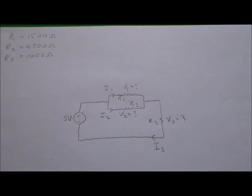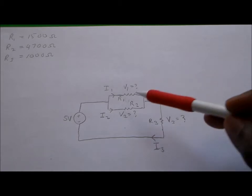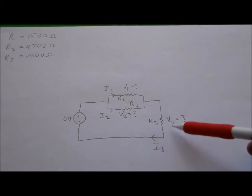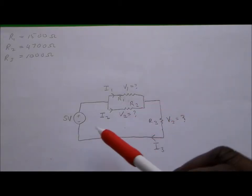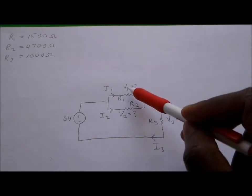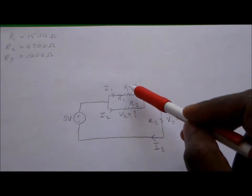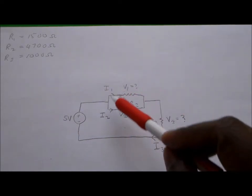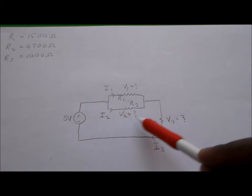You've been asked to find the voltages across each resistor and currents through each resistor in a circuit we'll call a combinatorial circuit. The reason we call it a combinatorial circuit is because we have two resistors that are in parallel, and we have one resistor that's in series with that parallel combination.